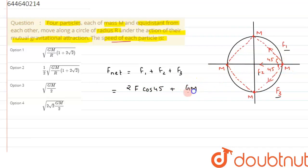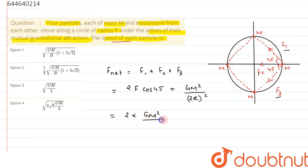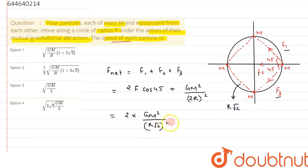For F2, acting directly across the diameter, we can write F2 = GM²/(2R)², since the distance between opposite masses is 2R (the diameter). For F1 and F3, the distance between adjacent masses is found by Pythagoras — it comes out to be R√2. So the 2F cos45° term becomes 2 × GM²/(R√2)² × (1/√2).